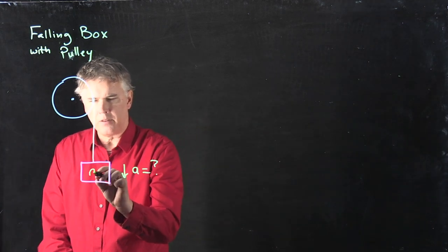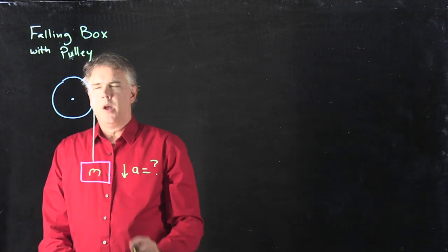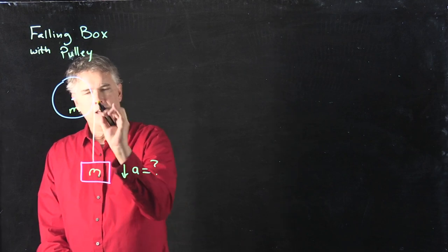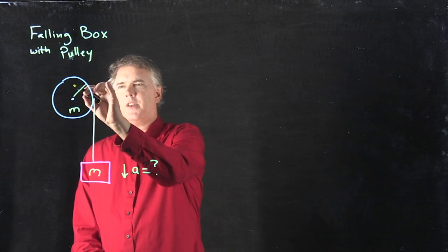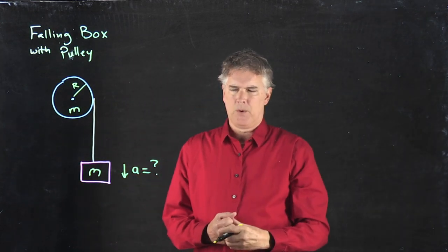First off, we're going to say that the mass of the box is m. We're going to say that the mass of the disc is also m. And the radius of the disc is capital R.